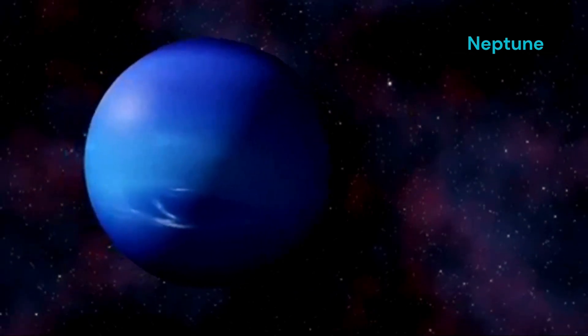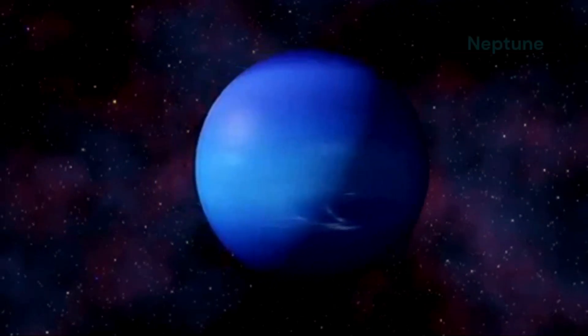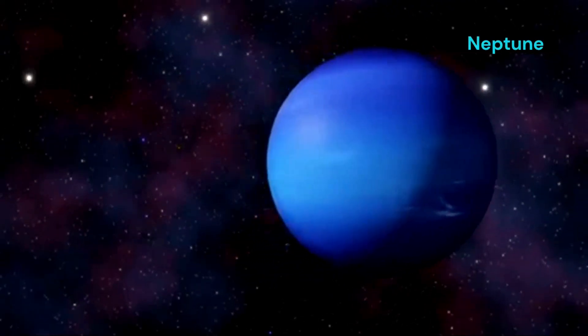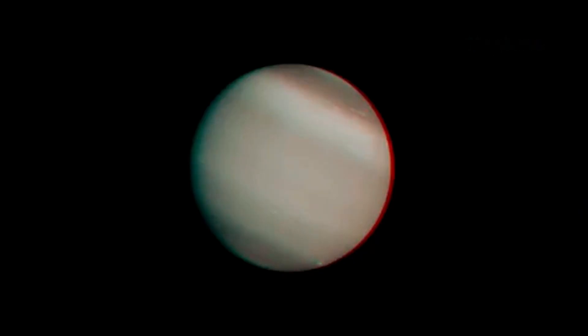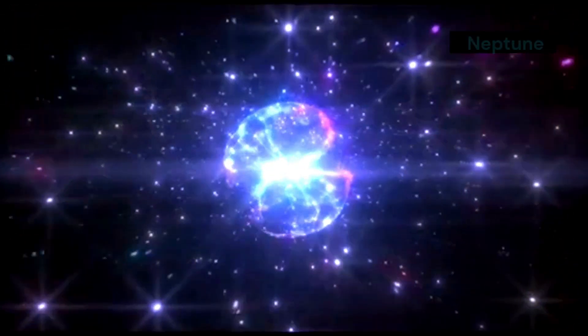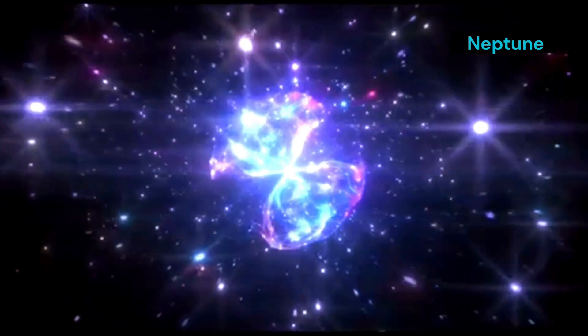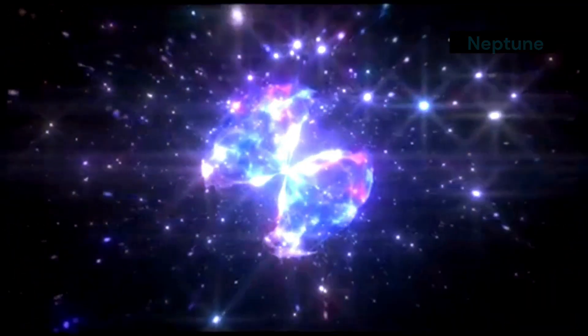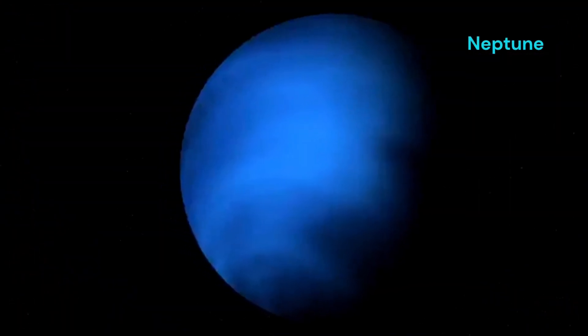Despite its distance, Neptune can sometimes be seen with a good telescope. Its deep blue color and mysterious nature continue to captivate astronomers and space enthusiasts alike. The blue giant remains one of the most intriguing and enigmatic planets in our solar system, a testament to the wonders of the universe. Using advanced infrared imaging, JWST detected a sudden spike in radiation near Neptune, evidence of a colossal impact. Not just a flash, but shifts in atmospheric gases and temperatures suggest that an asteroid, comet, or Kuiper Belt object was involved.